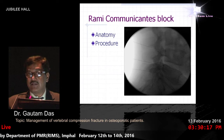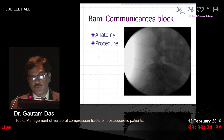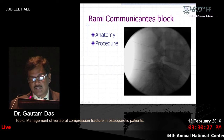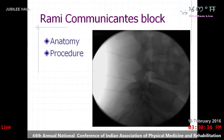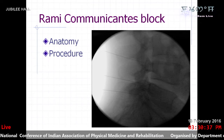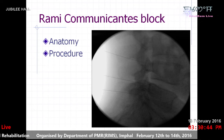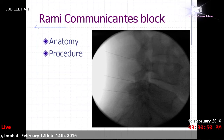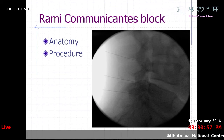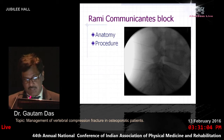Rami communicans block is one of the recent interventions gaining popularity for vertebral compression fracture. The rami communicans are sympathetic fibers starting from the nerve root and joining the sympathetic chain at the anterolateral aspect of the vertebral body. The needle is placed in this area and local anesthetic, steroid, or neurolytic agent can be used. Since the vertebral body is innervated mostly by sympathetic fibers transmitting signals via the rami communicans, blocking these fibers provides excellent pain relief and it is a simple procedure.